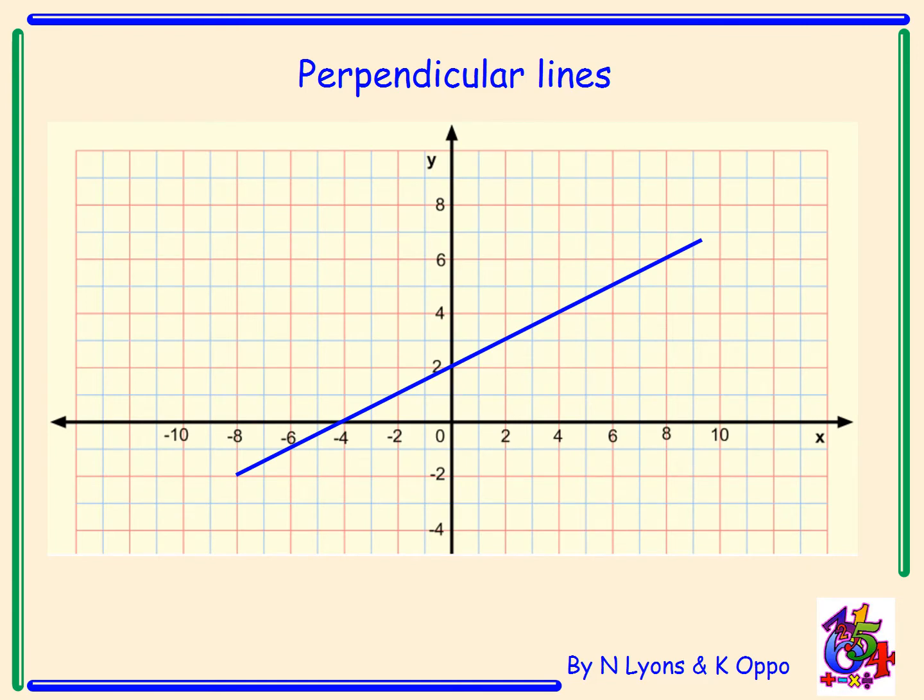So let's take a look at a perpendicular line. First of all we have this blue line. Let's work out the gradient of the line we're given. Using the points minus four zero and the point zero two we can work out the gradient. So we've got m1 the gradient of line one equals a half.